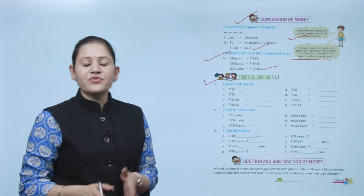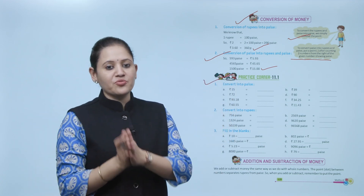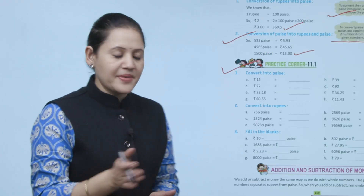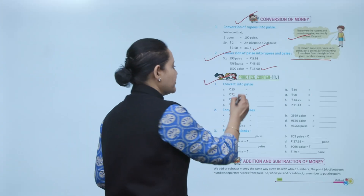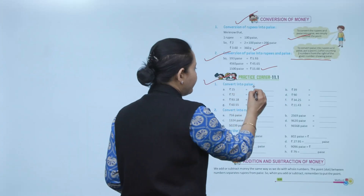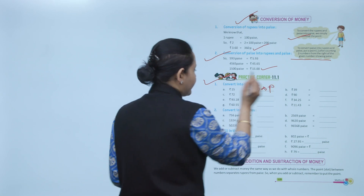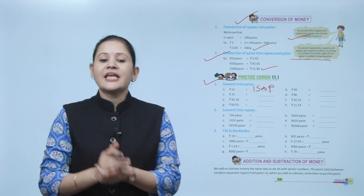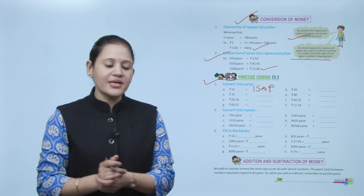Here we have to convert 15 rupees into paisa. As we know, 1 rupee equals 100 paisa, so 15 rupees equals 1500 paisa. Next is addition and subtraction of money.